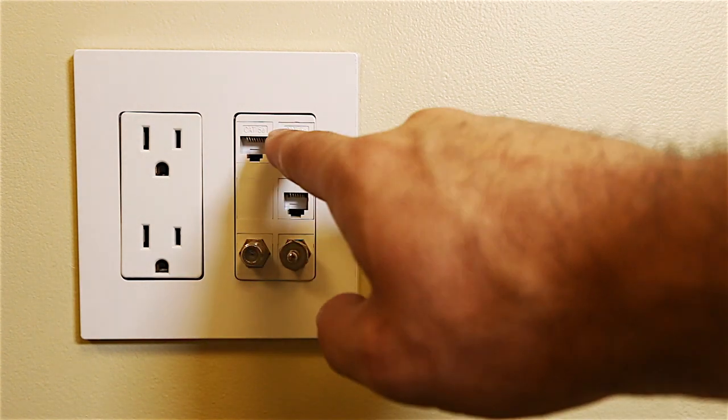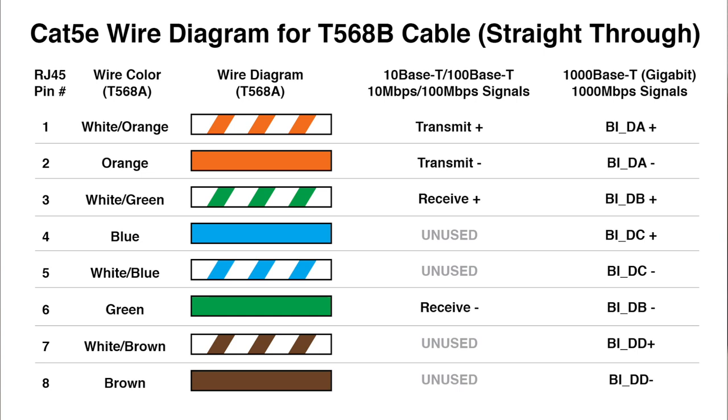Your Cat 5 cable really only needs four conductors as well. If you want to have the full gigabit, then you need eight conductors or four pair, which makes up a standard Cat 5 cable.